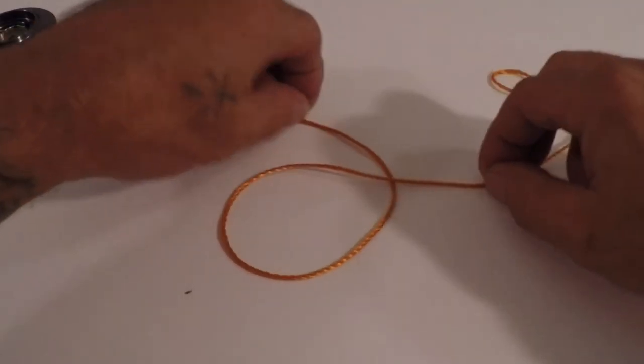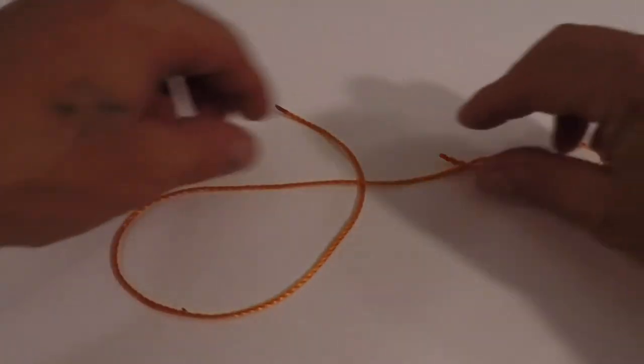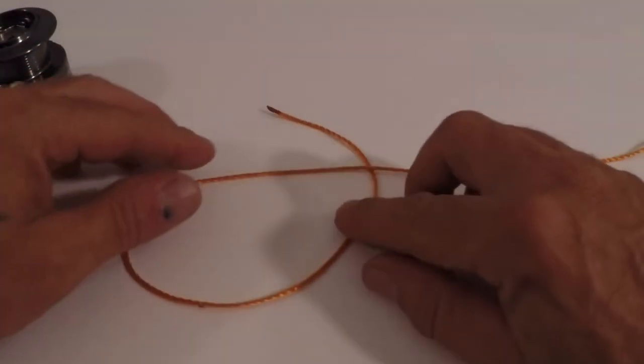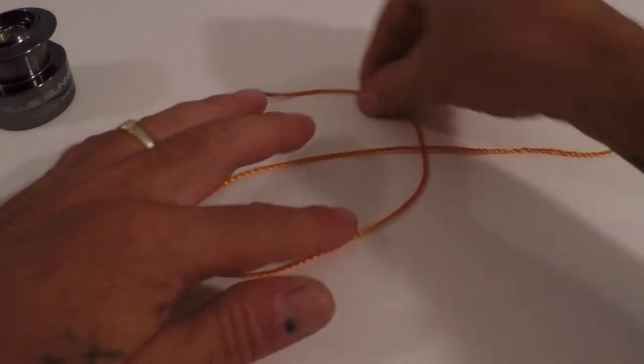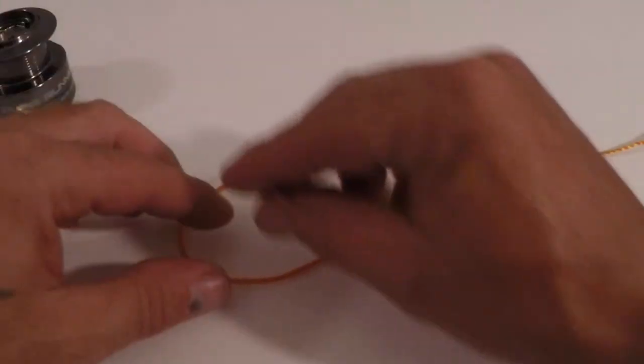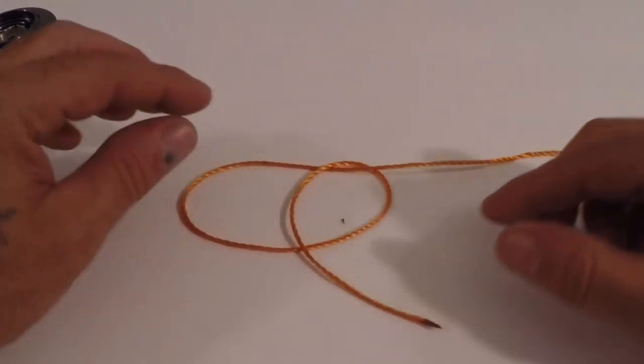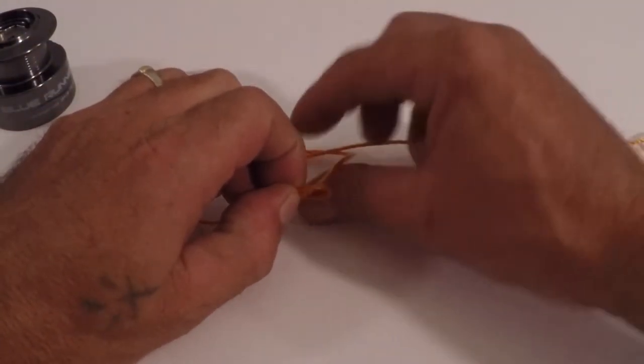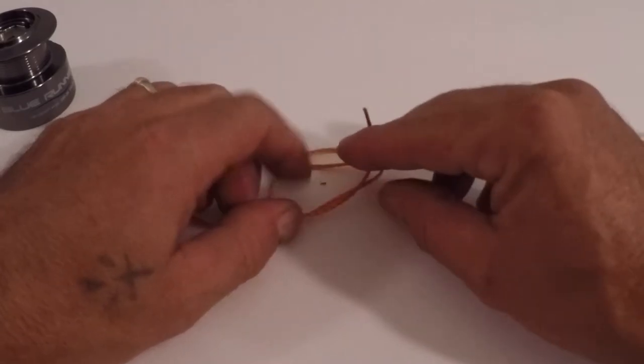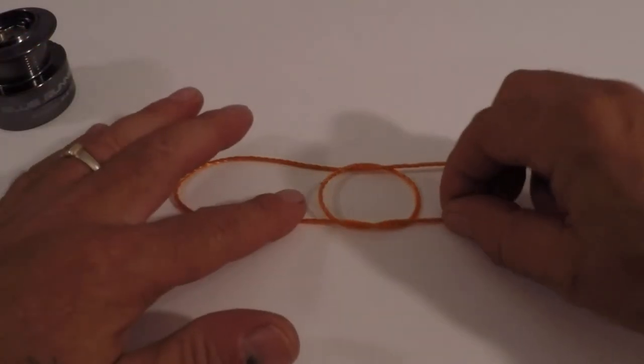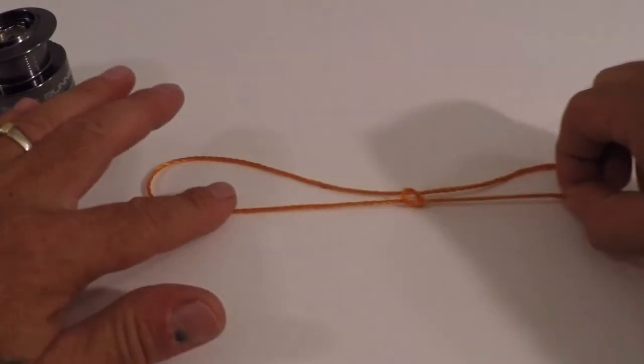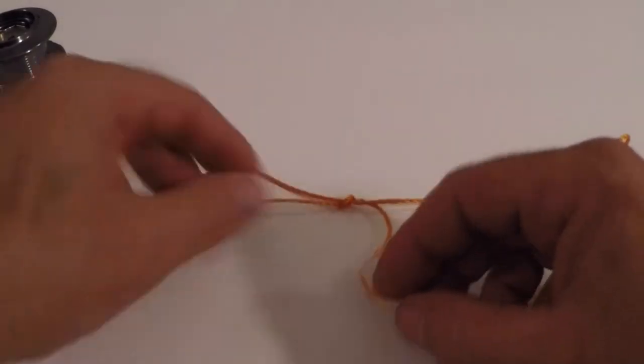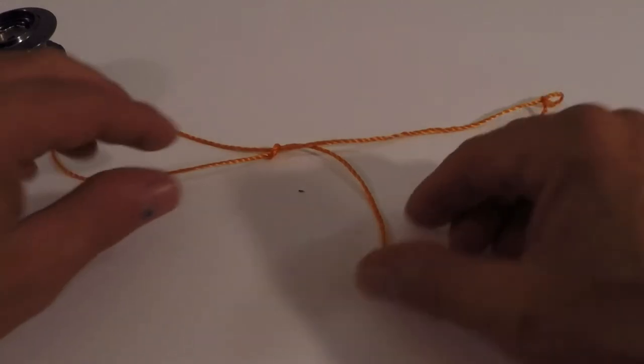You're gonna go under with your tag end. Let's make it bigger. Go under with your tag end, back over both of them, go back up through the middle like that. Then you just pull that knot and then you end up like that.